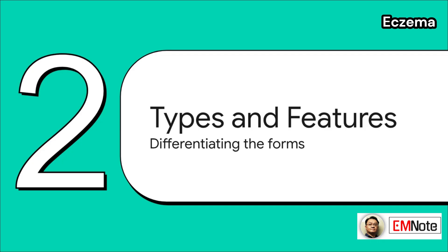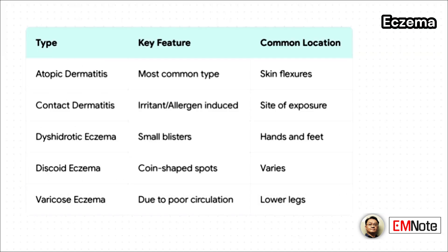Let's differentiate the common forms of eczema and their clinical presentations. The common types are differentiated by their features and location. Atopic dermatitis is the most prevalent and typically shows up in skin flexures. Contact dermatitis is localized right at the site of exposure to an irritant or allergen. And then you have other forms like dyshidrotic, discoid, and varicose eczema, each with its own distinct presentation that helps guide your diagnosis.